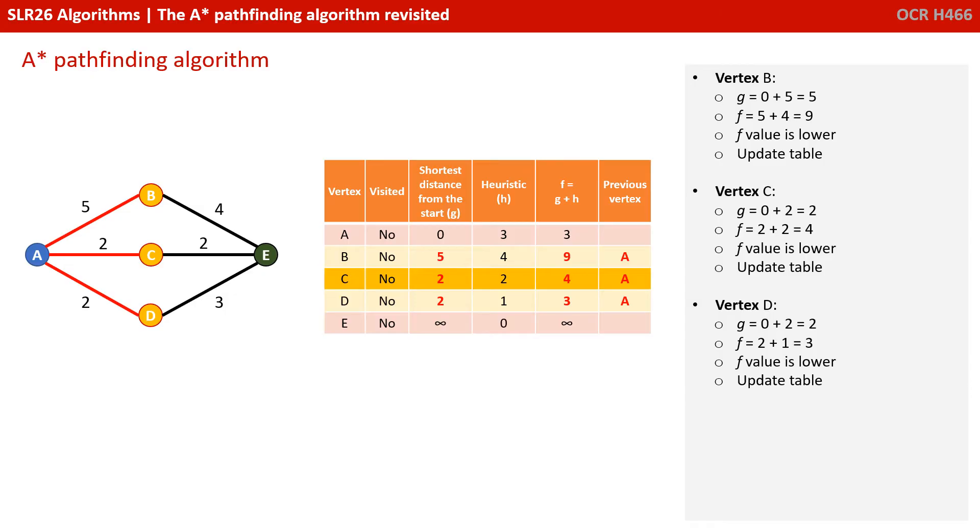Therefore, its F value is 5, plus its heuristic of 4 equals 9. This F value is lower than the one that was previously stored in the table of infinity, so we update the F value for B, and also set the previous vertex to A.